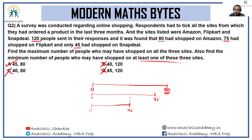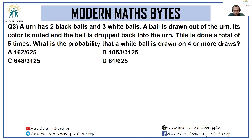Don't fall for the trap: just because 120 people sent in responses doesn't mean all of them definitely shopped on one of these sites. Someone could very well have sent in a response stating they shopped at none of these sites. Next: an urn has two black balls and three white balls. A ball is drawn from the urn, its color is noted, and the ball is dropped back. This is done a total of five times. What is the probability that a white ball is drawn on four or more draws?